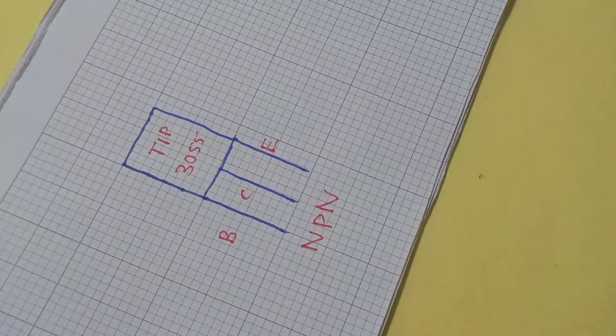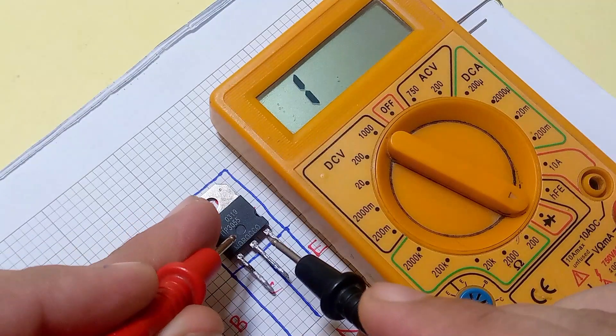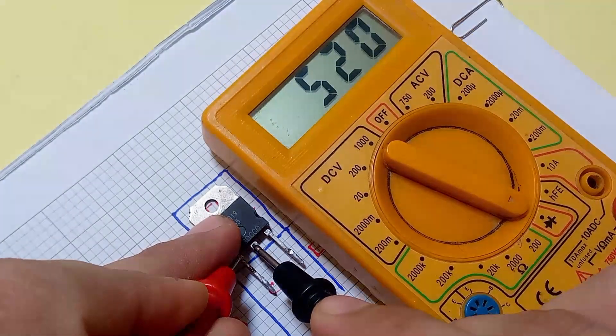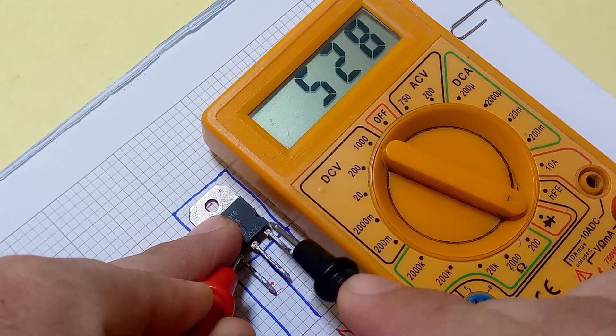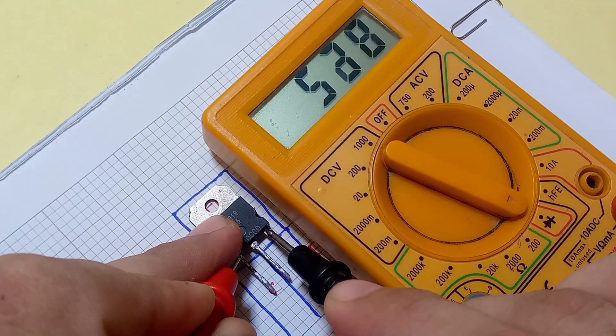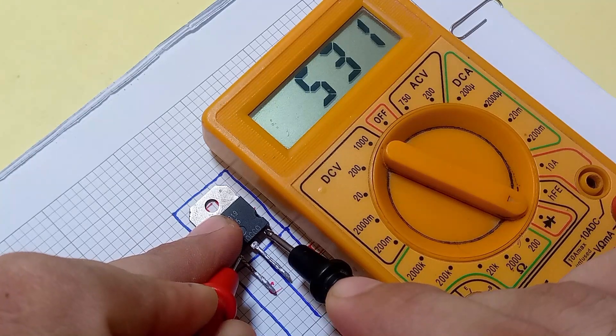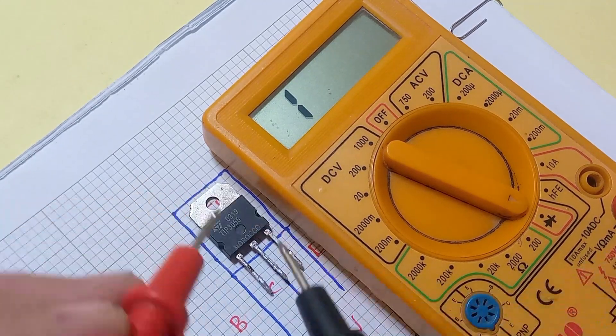Now, why do we call it an NPN type transistor? The answer is easy, look. All NPN type transistors show a reading only when the positive terminal of multimeter is connected with the base of the transistor.